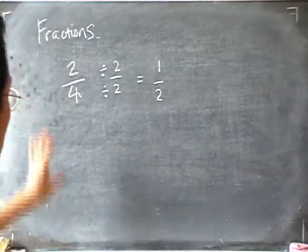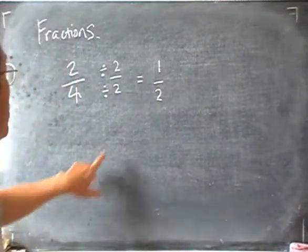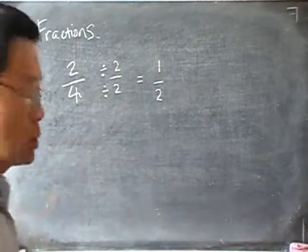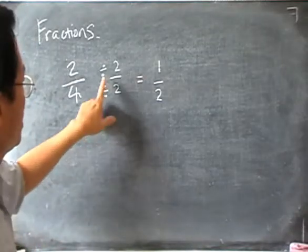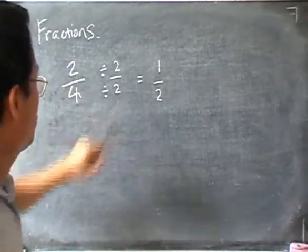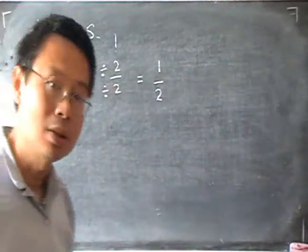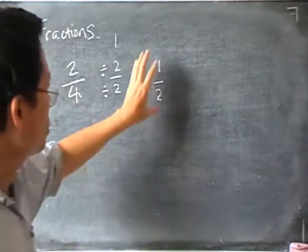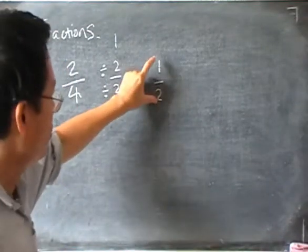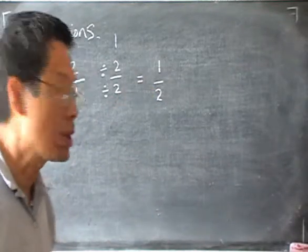Now, this is a simple operation, but the important thing to remember is the reason why we can do it. The reason is that 2 over 2 is 1. So when we divide by 2 on the top and bottom, we are really dividing the whole fraction by 1. And that's why we can do it — because when you divide something by 1, the answer should be the same. So even though one half looks different from 2 over 4, they are really equal. And because one half is made up of smaller numbers, we think of it as a simpler form.